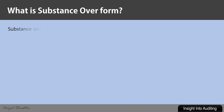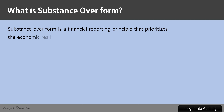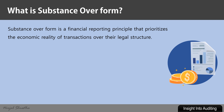Substance over legal form is a financial reporting principle that prioritizes the economic reality of transactions over their legal structure. Generally, the underlying economic substance of financial transactions aligns with the legal form. However, in some cases where it differs, the accounting of the transaction should be based on the underlying economic intention rather than its legal structure.